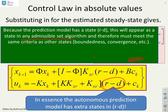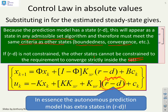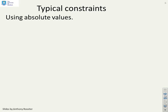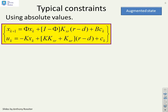Because r minus d is now a state in the prediction model, it must satisfy the same criteria as other states — boundedness, convergence, and so on. We insist on boundedness and convergence for all states in the admissible set algorithm, and the same must apply to r minus d. If r minus d is unconstrained, then none of the other variables can be constrained either — x could go anywhere if r minus d is allowed to go anywhere. This constraint is therefore essential.